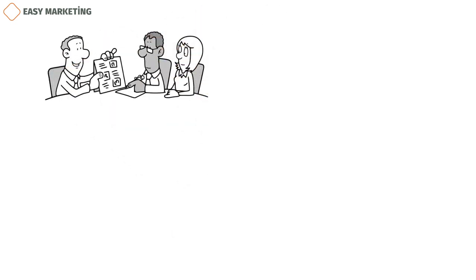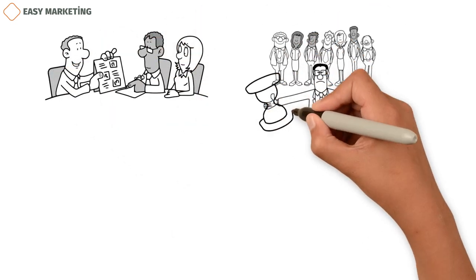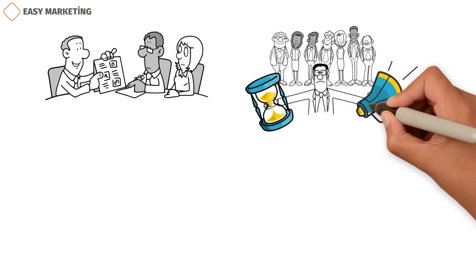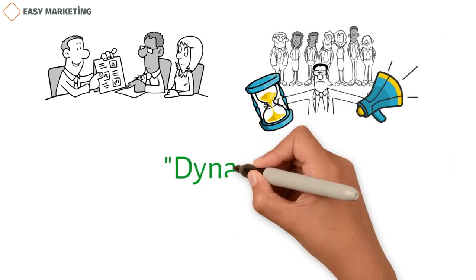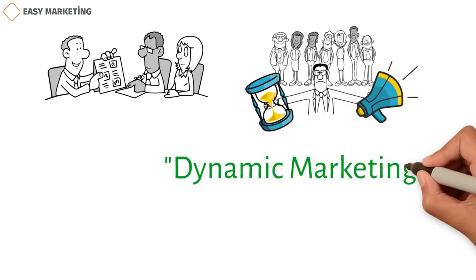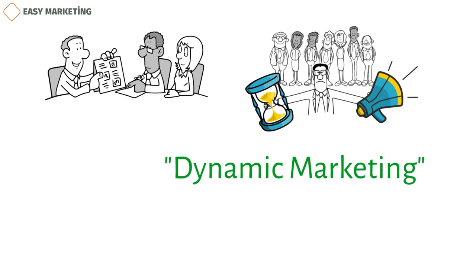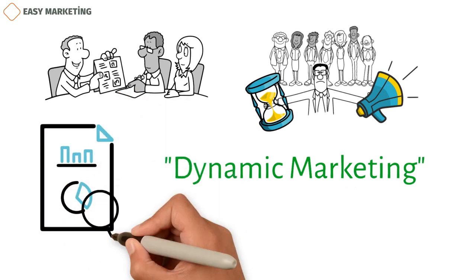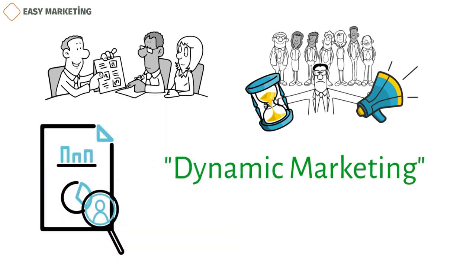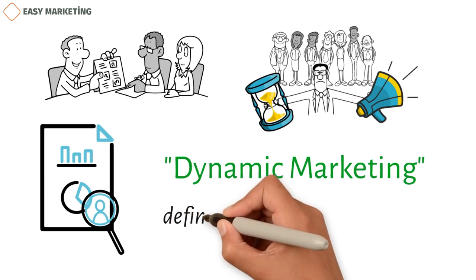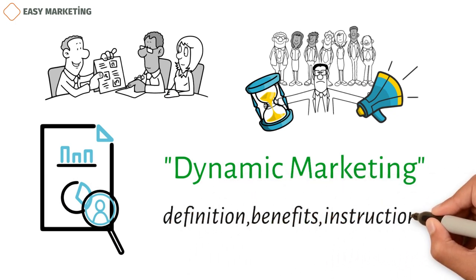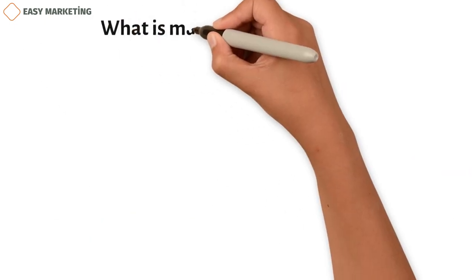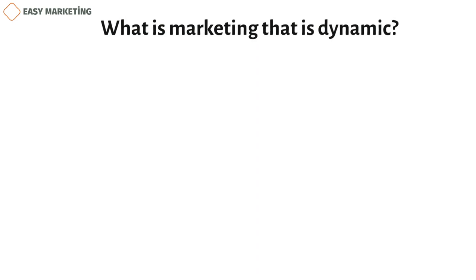Using marketing strategies on purpose can help a business reach the right customers at the right time with the right message. Some marketing experts use a method called dynamic marketing because of this. By learning about these strategies, you can use data to target a company's customers. In this video, we give an overview of dynamic marketing, including a definition, some of its benefits, and instructions on how to use it at work.